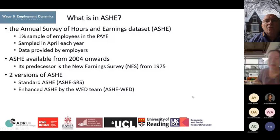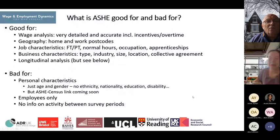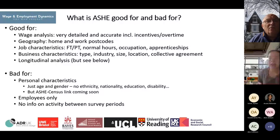ASH is good for wage analysis because it provides detailed and accurate information, including incentive pay and overtime pay. It also supports geography analysis because ASH has data on home and work postcodes. For job characteristics, ASH provides data on full-time, part-time, specific number of hours, occupation, and apprenticeship variables. For business characteristics, it has type of business, industry, size, location, and even collective agreement.